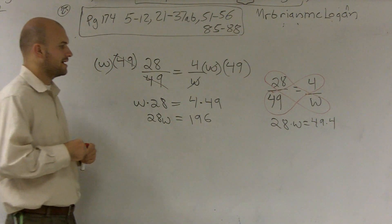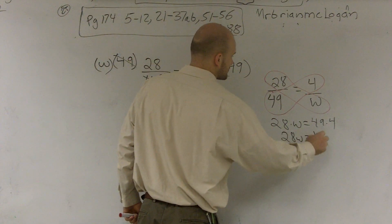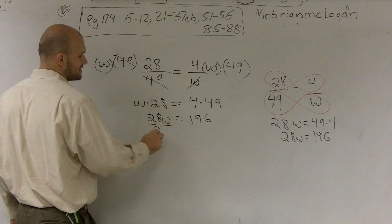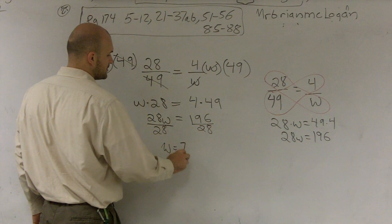So then from here, we have 28w. This equals 28w. It was 196. So to finalize our answer, we divide by 28. W equals 7.